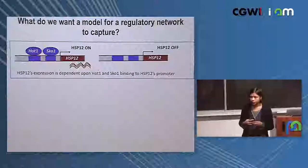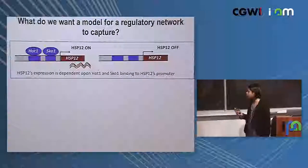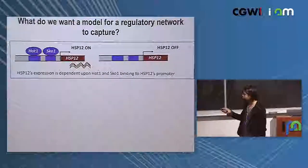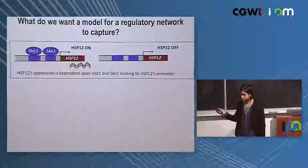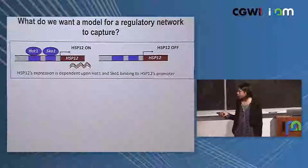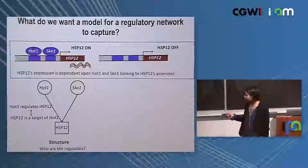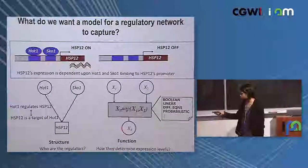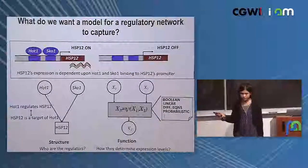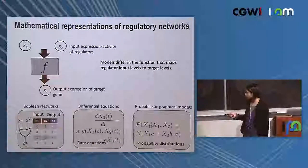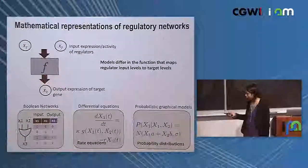Before getting into the algorithms, I'll describe what we want a model of regulation to capture. Here's a simple cartoon of a gene under the control of two transcription factors: when these two proteins bind to the DNA, the gene is on; when they don't, it's off. To capture this, we want two things: the structure of the model — that is, who regulates whom — and the logic as to how the two regulators control expression. In this case, it's like AND logic. People have tried to model these networks using Boolean networks, differential equations, and probabilistic graphical models.